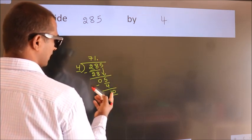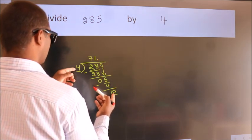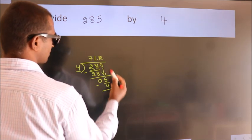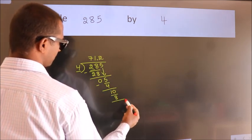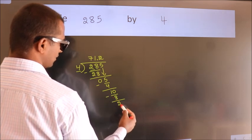So 10. A number close to 10 in the 4 table is 4 times 2, which is 8. Now we subtract. We get 2.